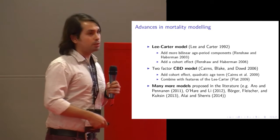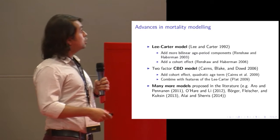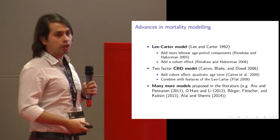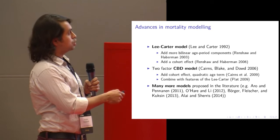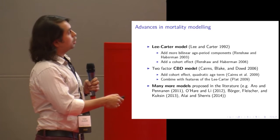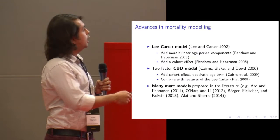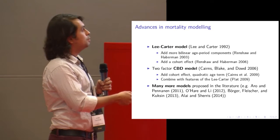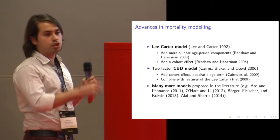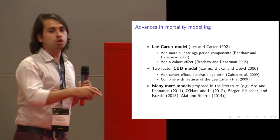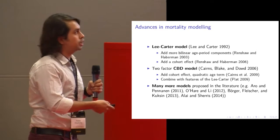There has been a huge development in the literature of mortality modeling starting with Lee and Carter, then a lot of extensions of that model, including more bilinear components and cohort effects. Then we have the famous CBD models and all of their extensions and functions, and there are many models in the literature which combine new terms or features of existing models.